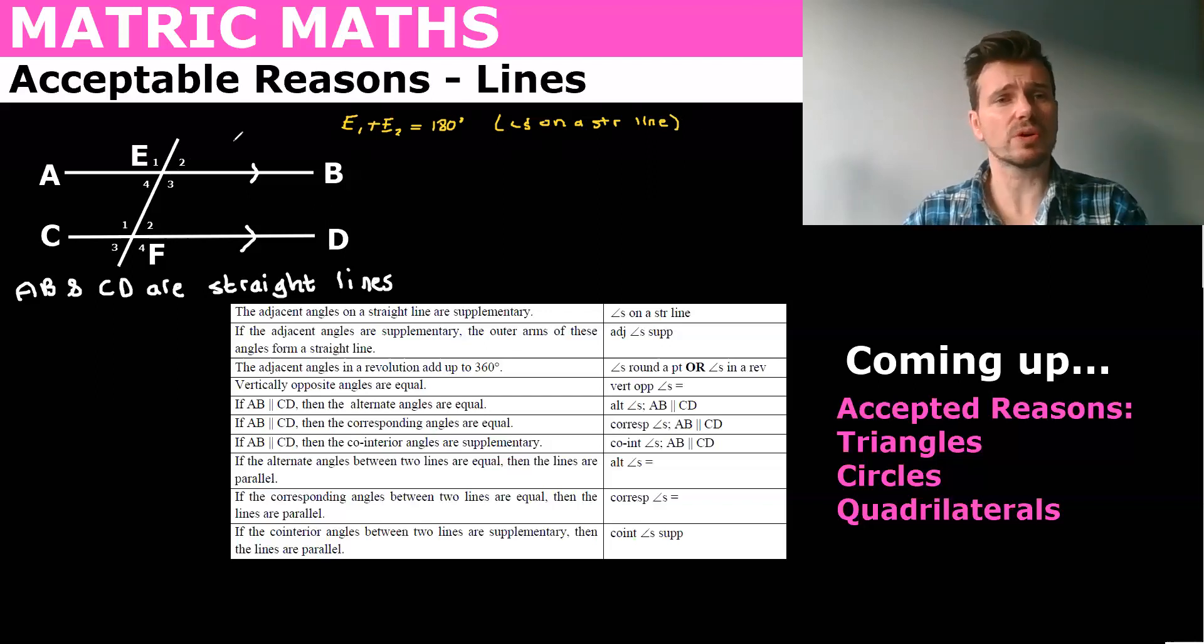Now say you weren't told that AB was a straight line. So that was this one here we've just done. We weren't told but they could give you that this was a hundred and this was 80. So now we want to prove that AB is a straight line. You're not going to probably have to do this in your final exam but you never know it might come up. So then you would say E1 plus E2 equals 100 plus 80 equals 180 and that you would say is given.